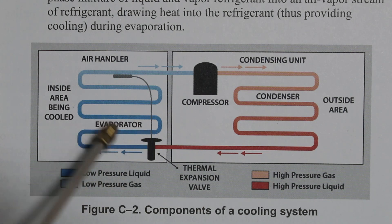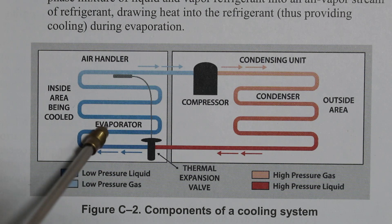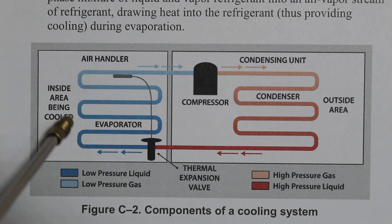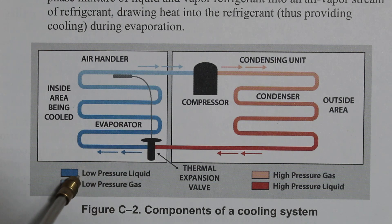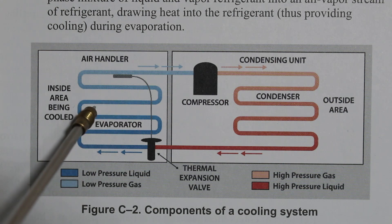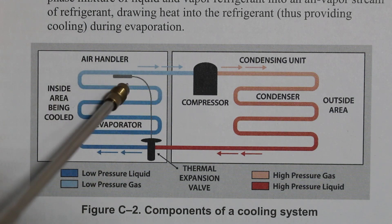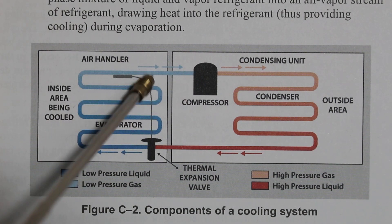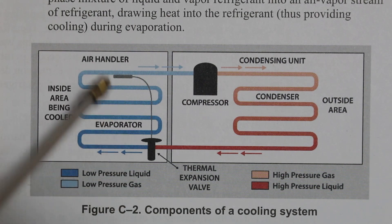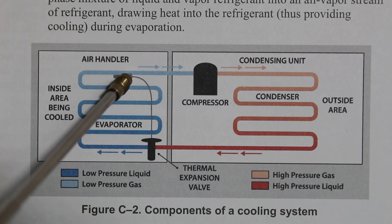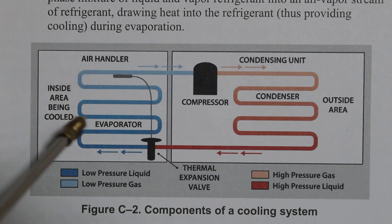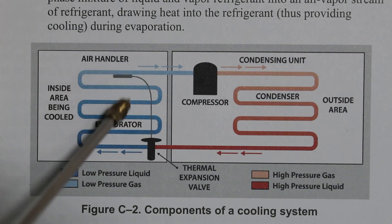Refrigerant continues down the cycle and we enter our fourth major component — the evaporator. Our evaporator is a coil just like our condenser, made out of copper with aluminum fins alongside a fan which blows air across it. In the evaporator we absorb heat, compared to the condenser where we reject heat. We enter as a low pressure liquid, and at about midpoint our refrigerant is saturated and we have latent heat of vaporization — a change of state from a liquid into a gas. The pipe leaving our evaporator and entering our compressor is known as our suction line, and on that suction line we are a low pressure, low temperature, superheated vapor.